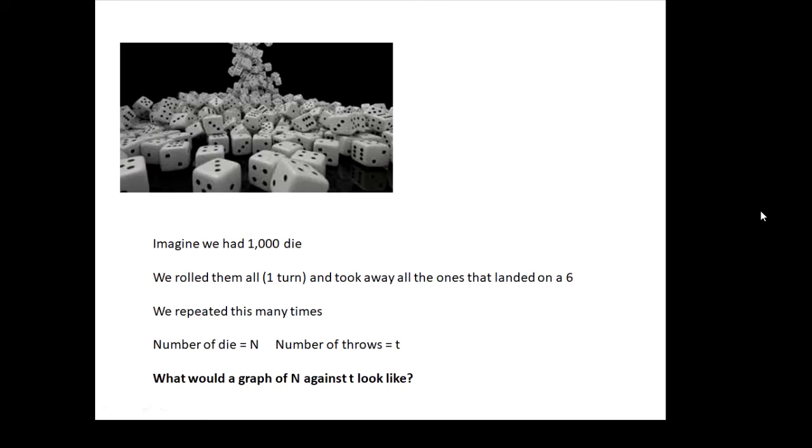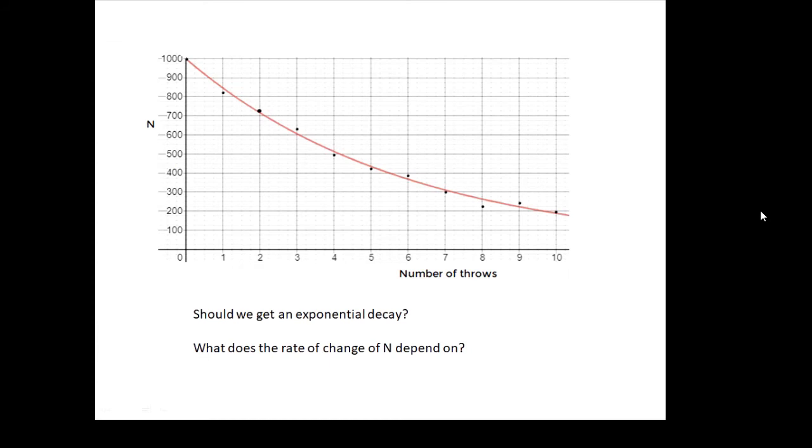And this is an experiment we actually do. And the answer is, it should look like something like this. Again, is this characteristic exponential decay? We're starting with a certain value. In this case, it's 1000. And we get this characteristic curve.